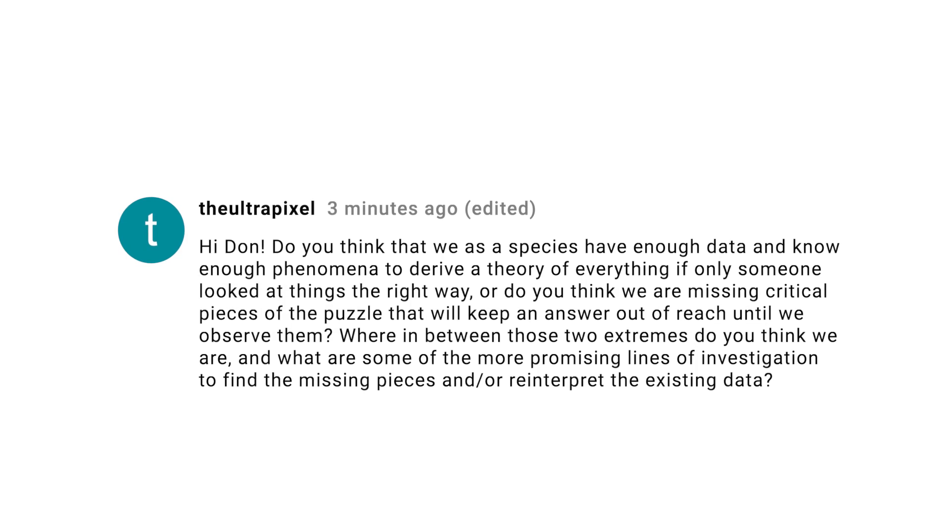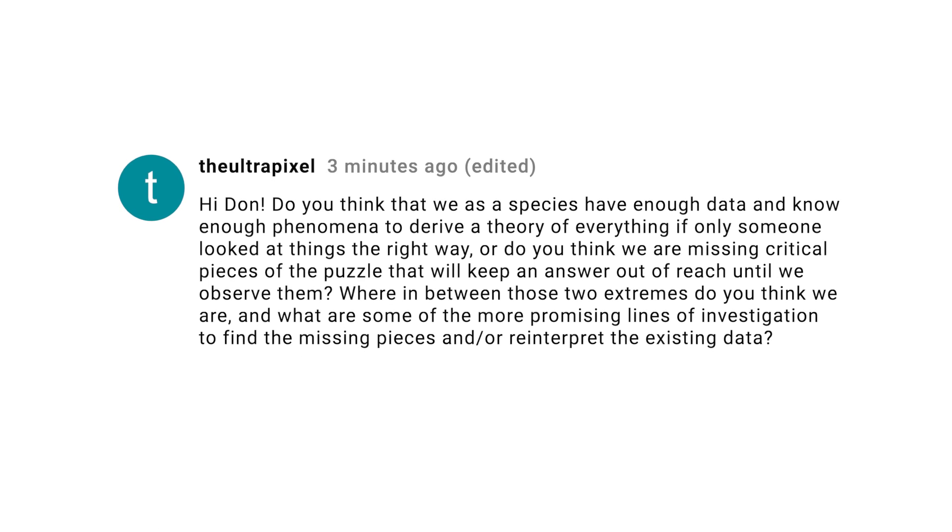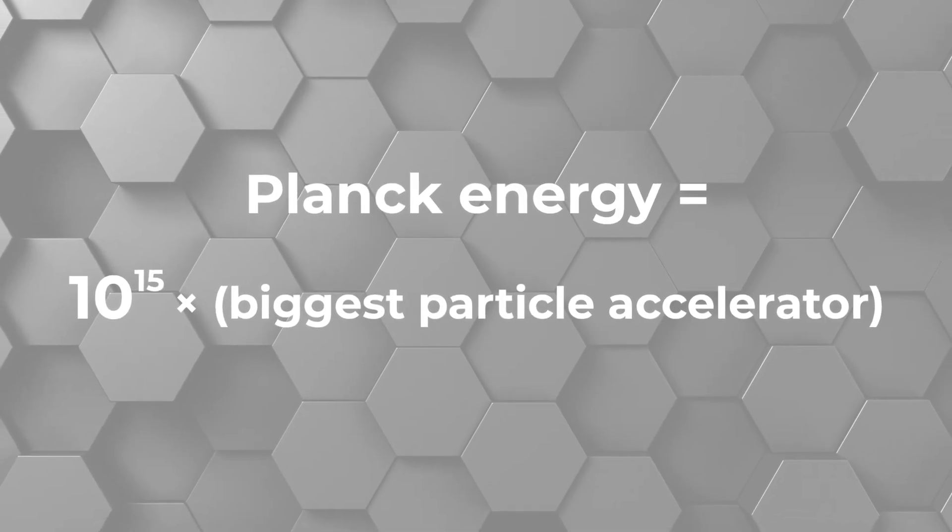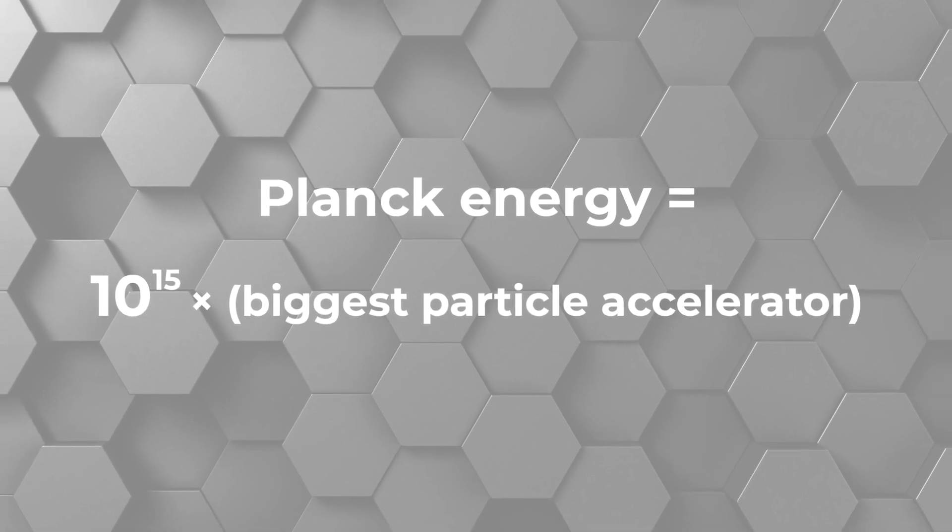The Ultra Pixel asks if we have enough data to work out a theory of everything if we're smart enough, or if we're missing important pieces. I guess it's possible that some smart whiz kid might figure things out, but I totally doubt it. There are many things we don't understand, like dark energy, dark matter, and a bunch of other things. We talked in this episode about the Planck energy, which is the energy at which the laws of physics as we know them must break down — that energy is about a quadrillion times higher than what the most modern particle accelerator can achieve. It's inconceivable to me that as we explore higher energies, we won't encounter phenomena that we can't even imagine now. I think we're talking thousands of years of research before we can talk about a realistic hope of finding a theory of everything.